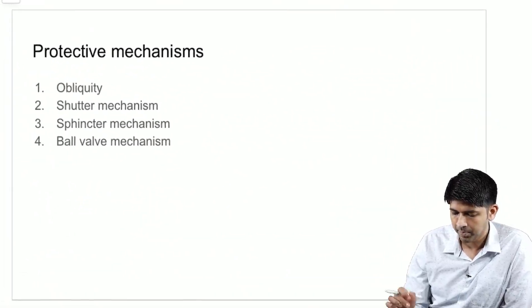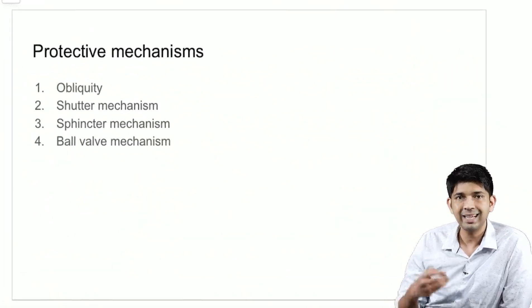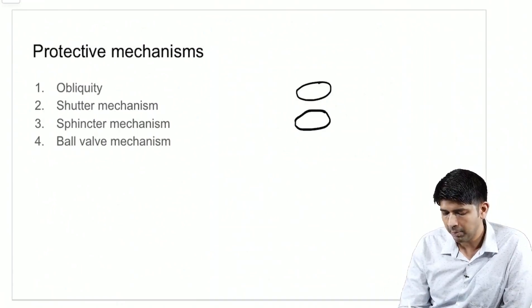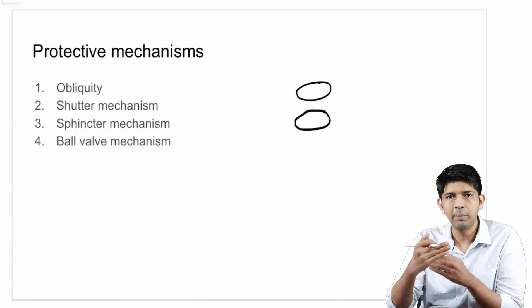So, what are the protective mechanisms? We know that at childbirth or when the baby is born, both the superficial and the deep inguinal ring are one above the other.